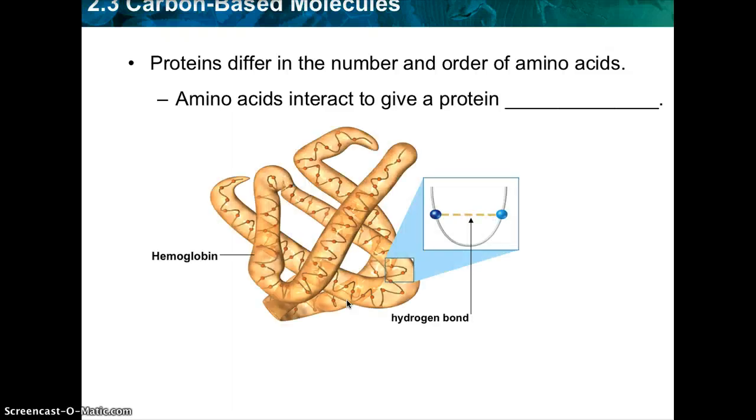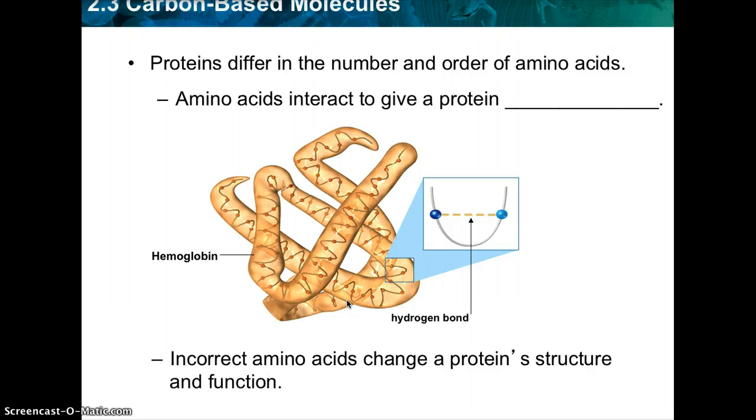So here's a picture of hemoglobin. So again, incorrect amino acids change the protein structure, which is going to change the function. So it's very important that the correct amino acids get put in the correct order so that the correct structure and function of the protein happens. That's where we get a lot of the genetic disorders is when the amino acids kind of mess up.